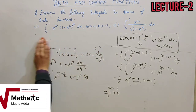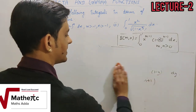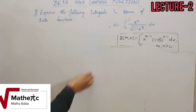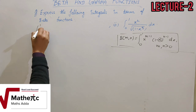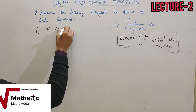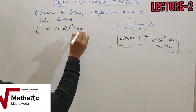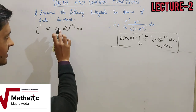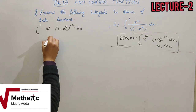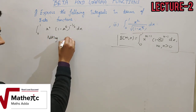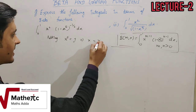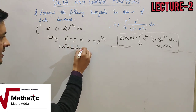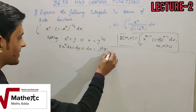Now see the second numerical: the integral from 0 to 1 of x² · (1-x⁵)^(−1/2) dx. From the help of the first numerical, it should be clear that we need to convert x⁵ to power 1. So the first step is to let x⁵ = y, giving x = y^(1/5). Differentiating: 5x⁴ dx = dy, so dx = dy / (5x⁴).